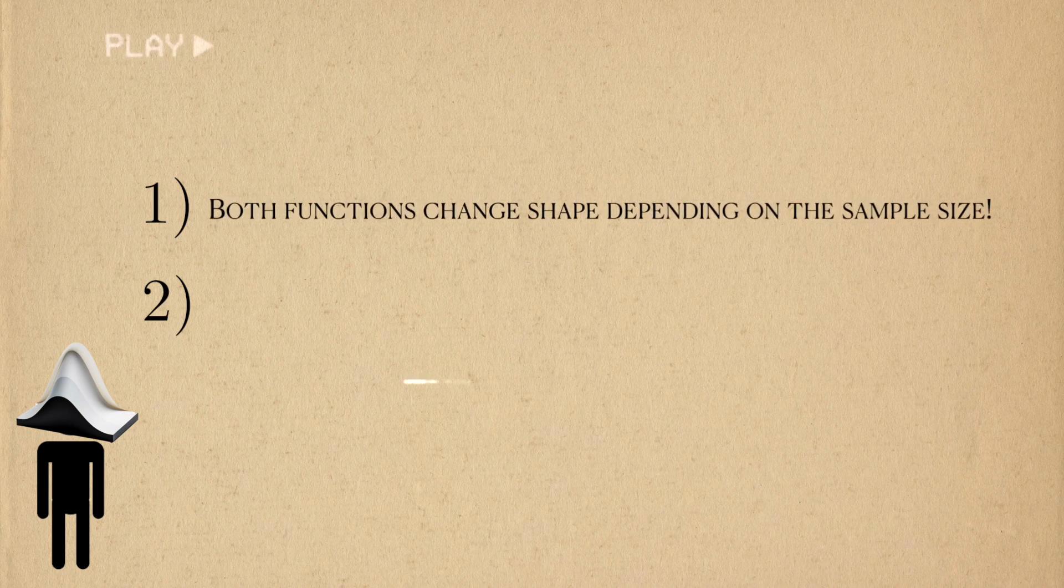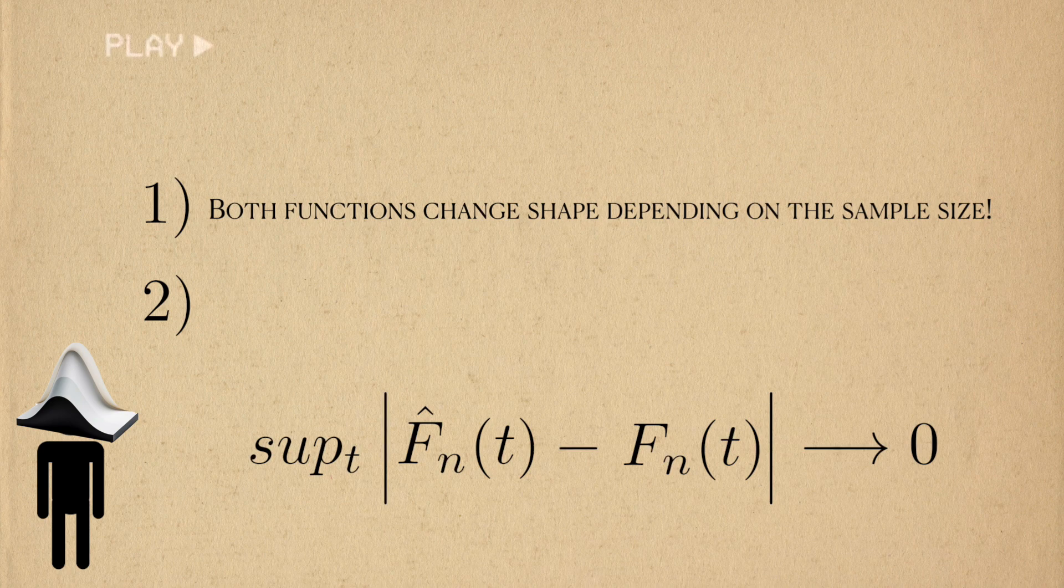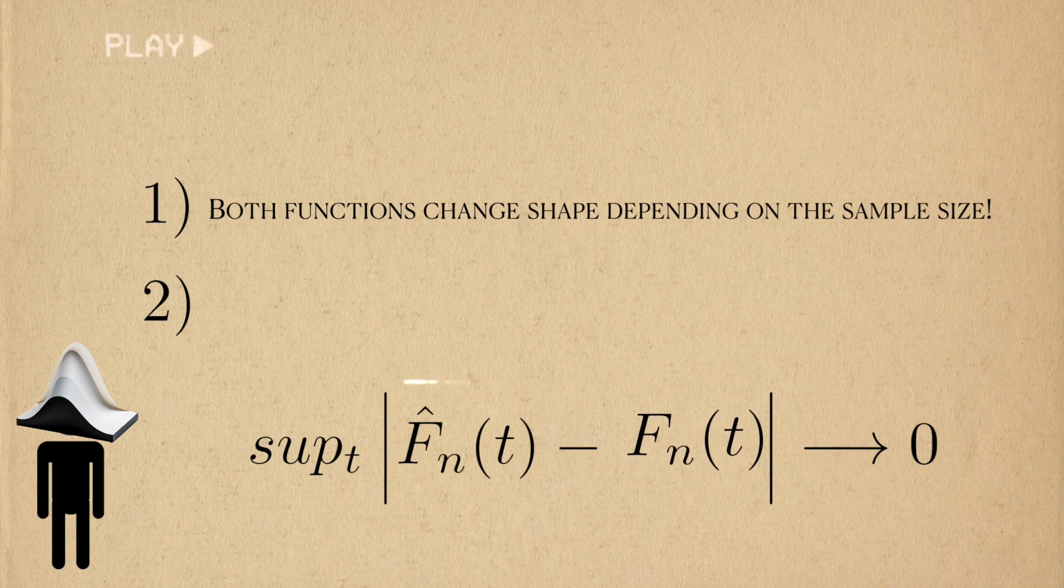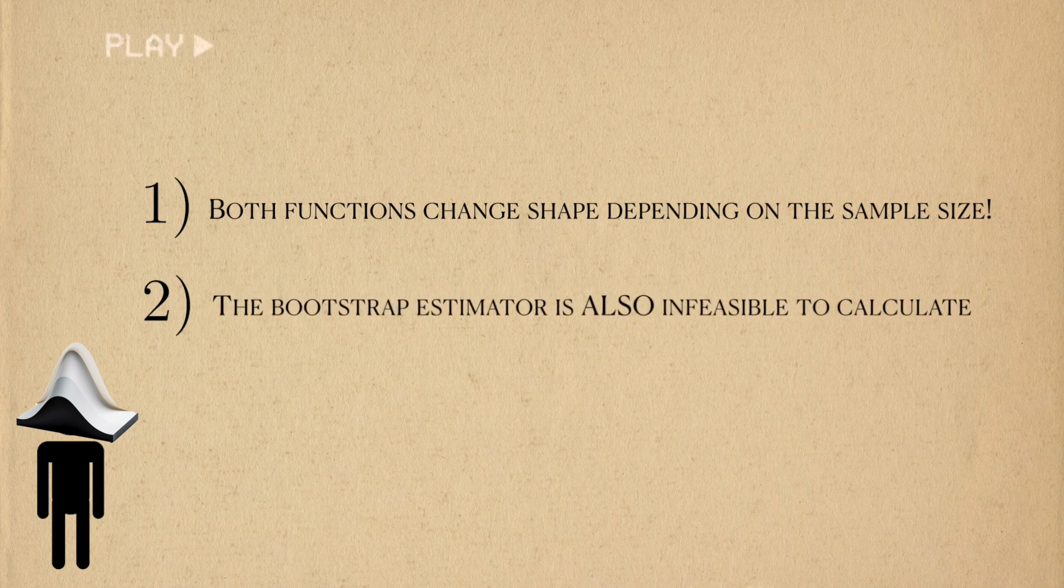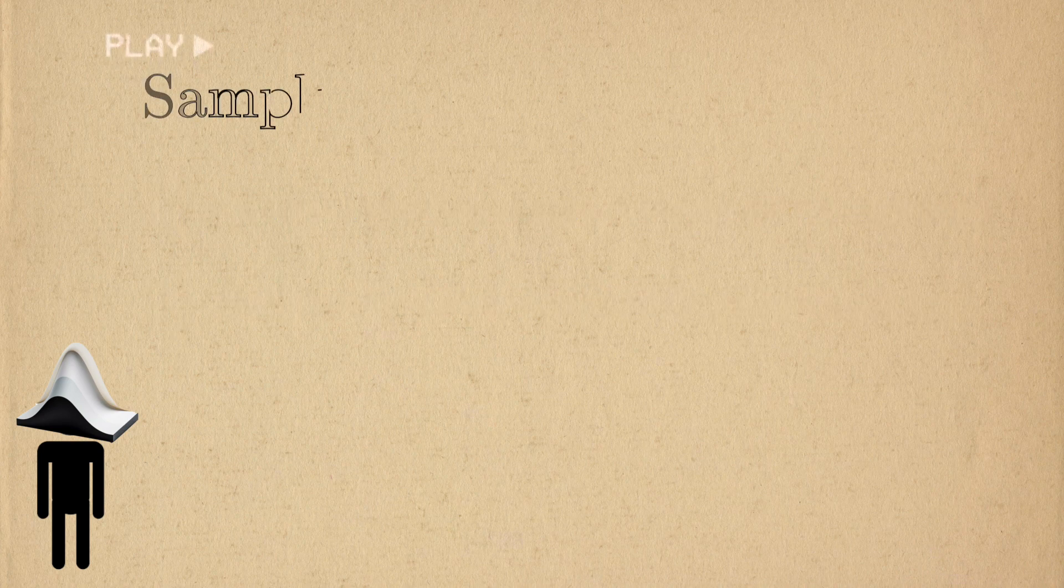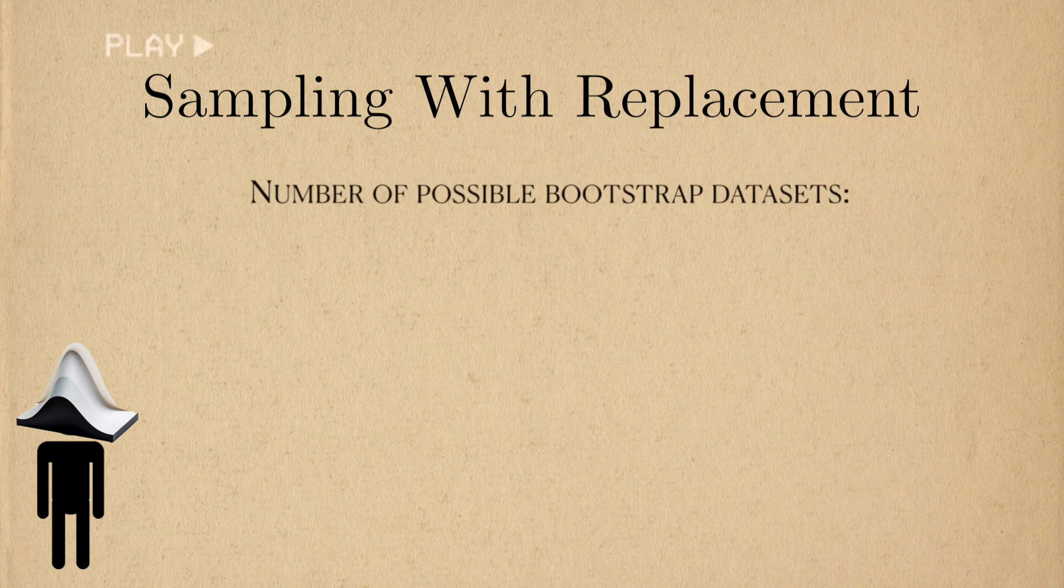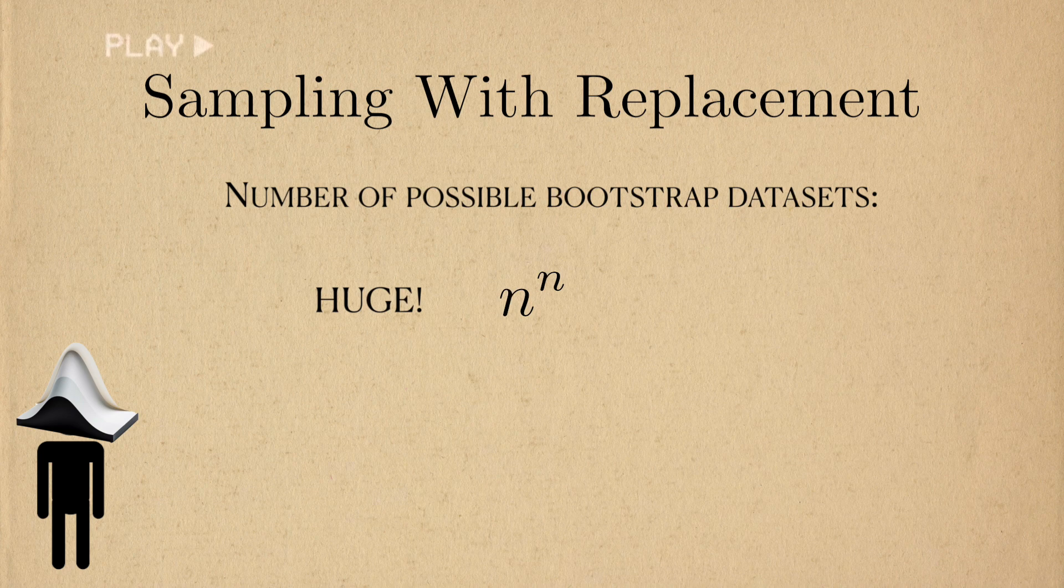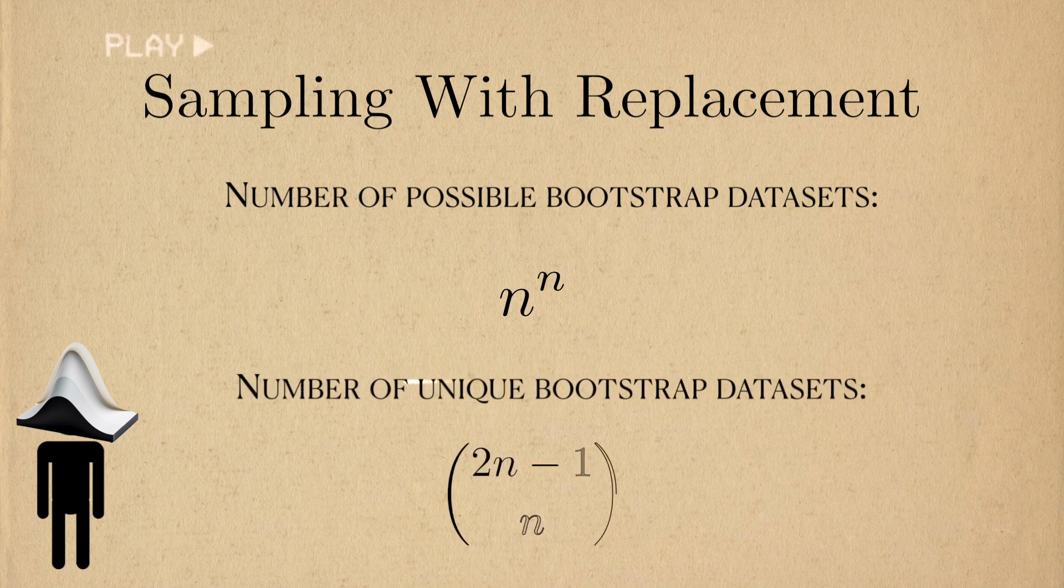One is the fact that the sampling distribution depends on sample size. How can we show that two functions uniformly converge if the target is always changing with sample size? Second, it's actually infeasible to get the full bootstrap distribution. When you sample with replacement, the total number of possible bootstrap datasets is given by this equation, but many of these will be duplicates. The number of unique bootstrap datasets is given by this equation.